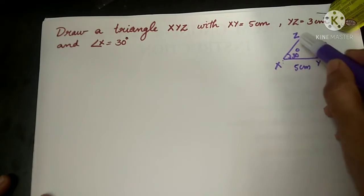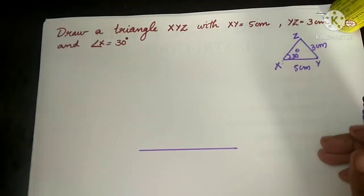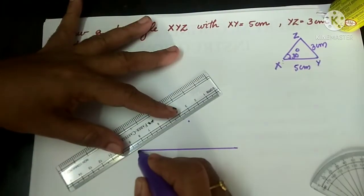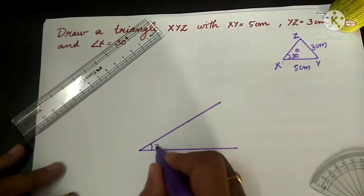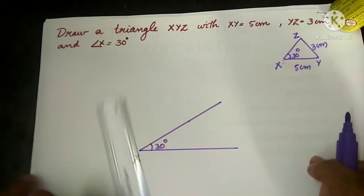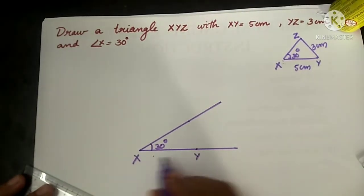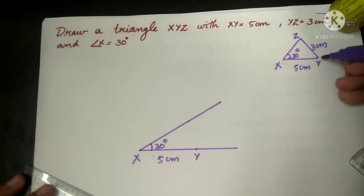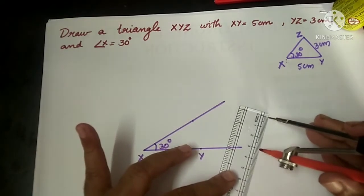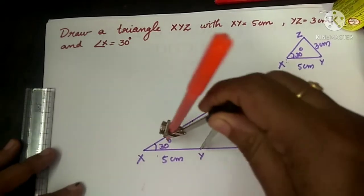To draw this triangle, first we will mark a 30 degree angle. I draw a straight line, and by using the protractor at one end, I mark 30 degrees and join this point to get the 30 degree angle. I mark it as X. From the figure, XY is 5 cm, so by using the scale, I mark a point 5 cm away from X and mark it as Y. Now we have to mark 3 cm. To mark 3 cm, fix a pencil on the compass, take 3 cm in the compass. Keep the metal point on point Y and cut an arc.